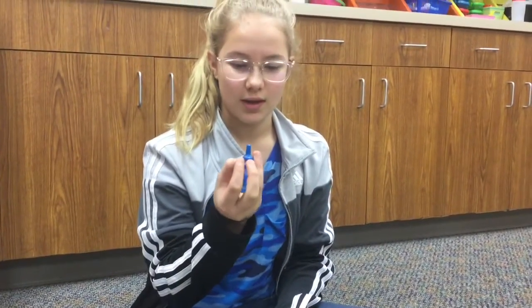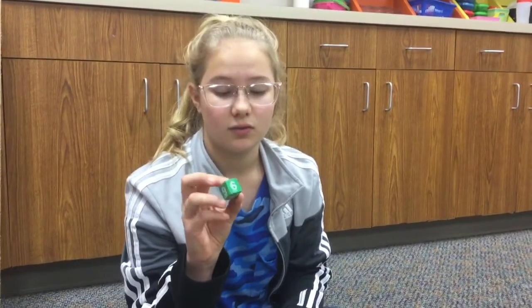So first, we're going to start off with the basics. A blue pawn is x, and a white pawn is the opposite of x. Together, these make a pair of zero. This green cube is a negative, so whenever you see this, it's a negative number. And this red cube is a positive.